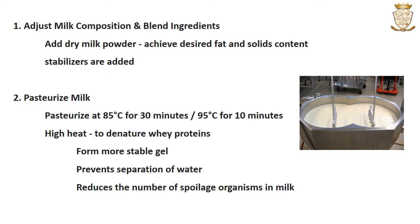The second step is pasteurization of the mix. The milk mixture is pasteurized at 85°C for 30 minutes or at 95°C for 10 minutes. This high heat treatment is used to denature the whey proteins, allowing them to form a more stable gel and preventing the separation of water or whey during storage. The high heat treatment also reduces the number of spoilage organisms in the milk.